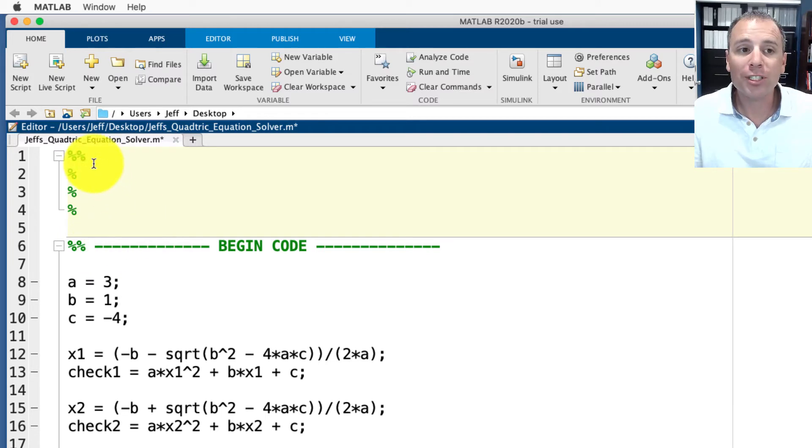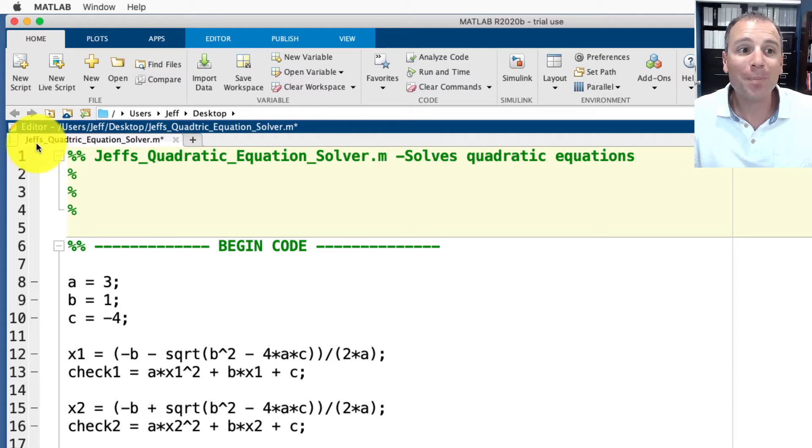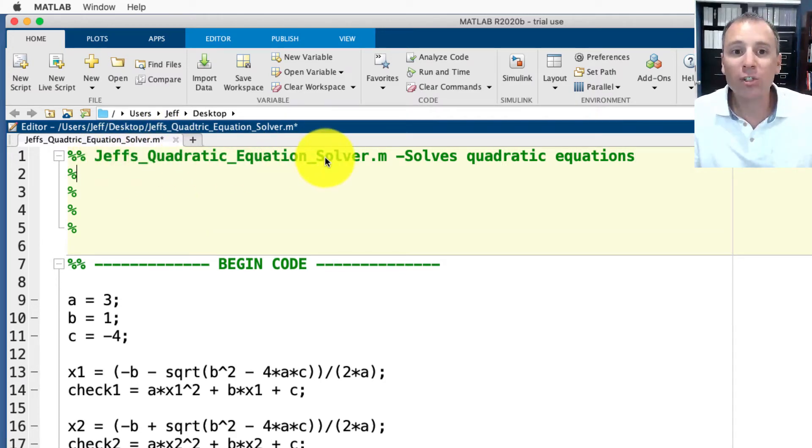Now that we have this structure set up let's go ahead and push space. The first line of our documentation is gonna be known as the script name and then a short description. In this case I already know my script is called Jeff's quadratic equation solver and then for the short description I'm gonna say this solves quadratic equations. Of course we see that this is not saved so I'm gonna go ahead and control save that.